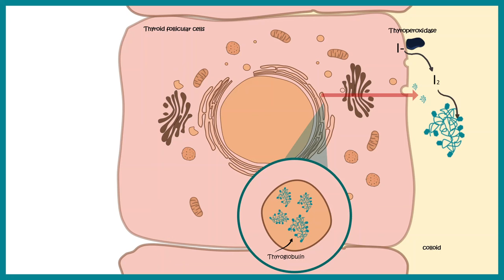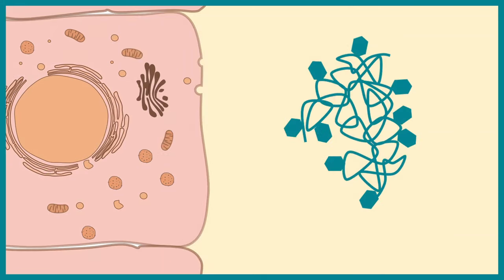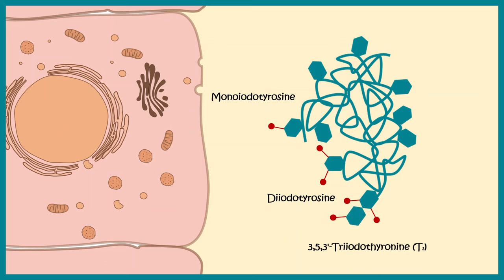Inside the colloid, the thyroglobulin undergoes iodination. Iodination at one position on a tyrosine moiety produces monoiodotyrosine (MIT); iodination at two positions produces diiodotyrosine (DIT). These iodinated residues can then combine — MIT and DIT combine to form T3, while two DIT molecules combine to form T4.